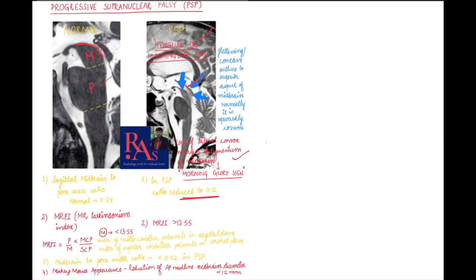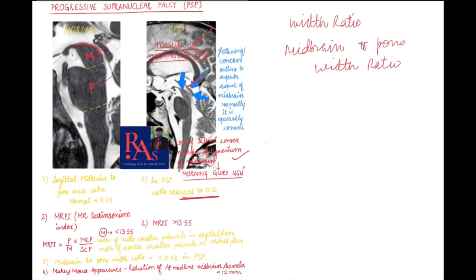Another important marker is the midbrain-to-pons width ratio. Unlike the area ratio discussed earlier, this is a width ratio. In Progressive Supranuclear Palsy, it is less than 0.52. This also needs to be calculated on the midline sagittal plane.